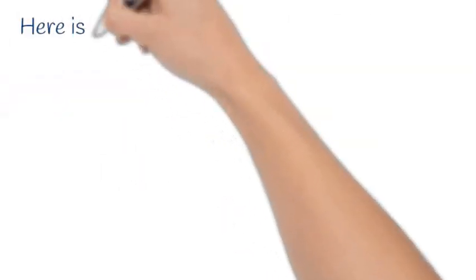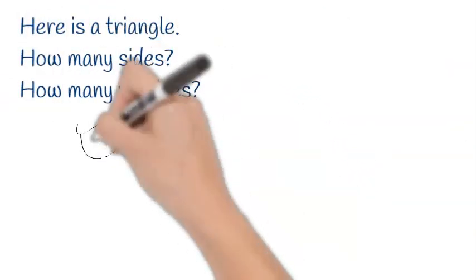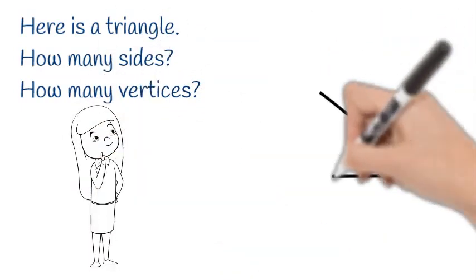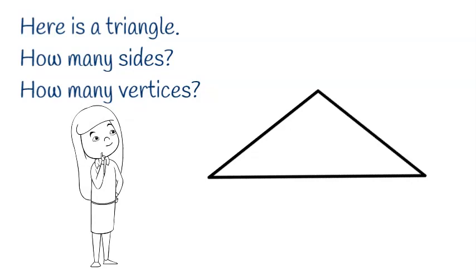Here is a triangle. How many sides? How many vertices? One, two, three. Three sides. One, two, three vertices.